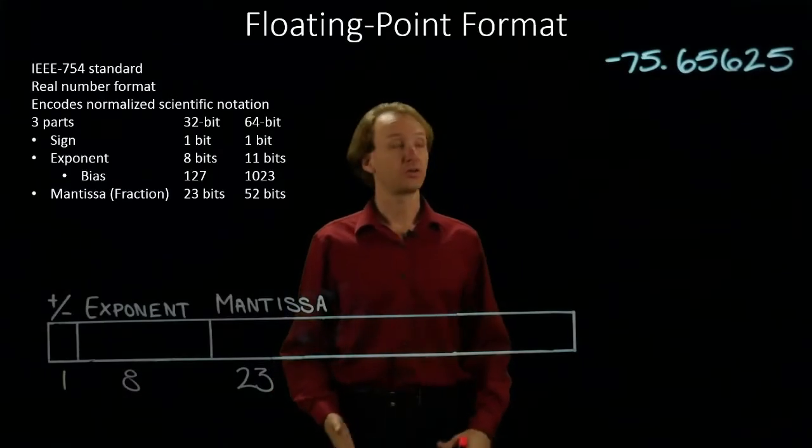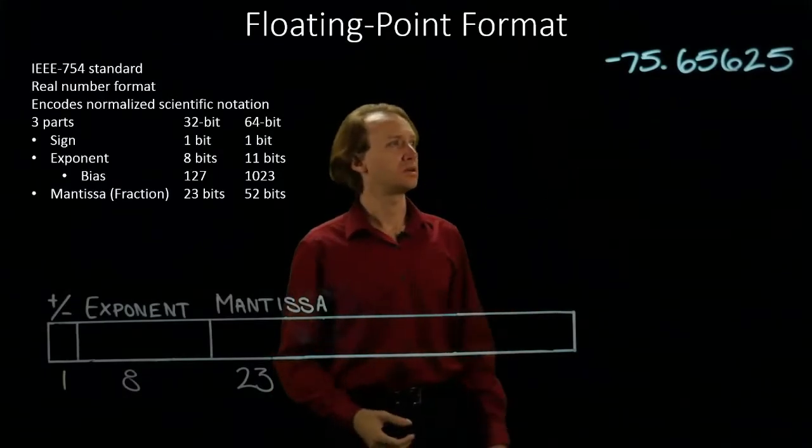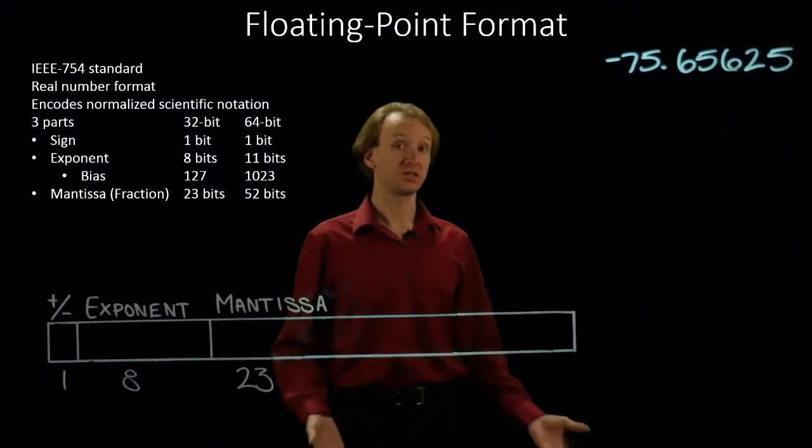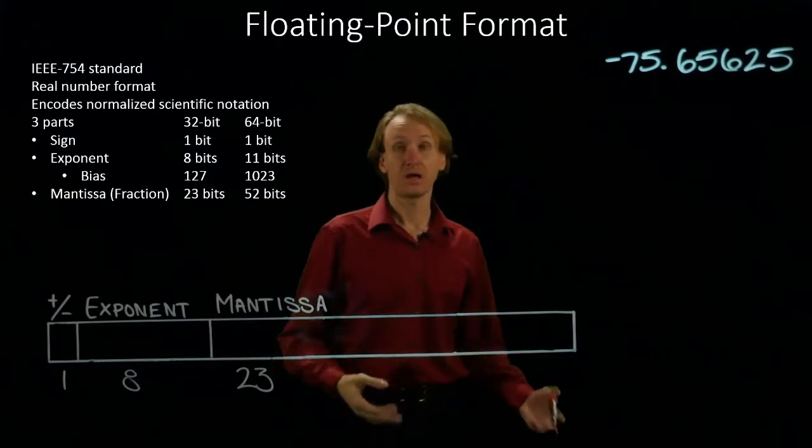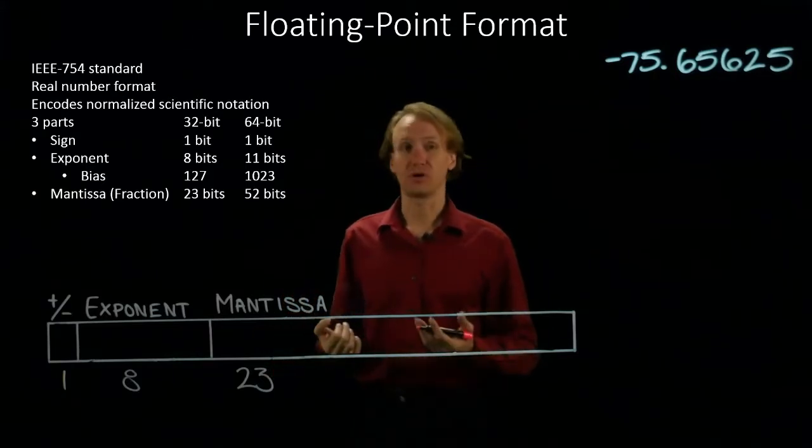For this example, we have another complex looking number, negative 75.65625. And again, we're going to convert this to floating point format.